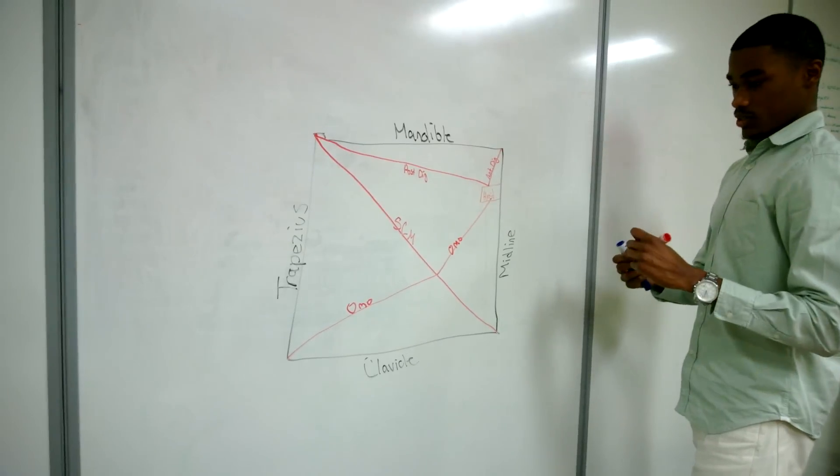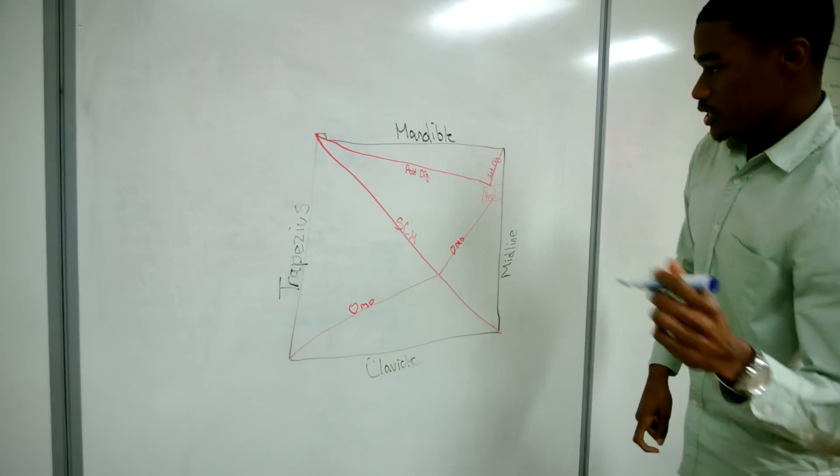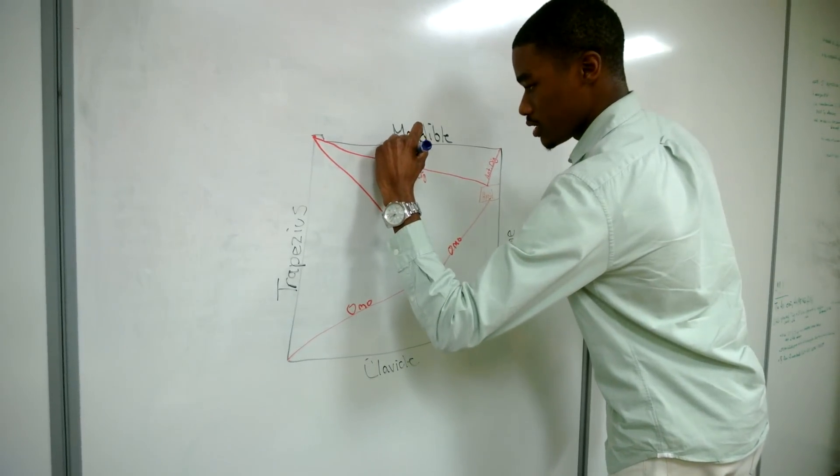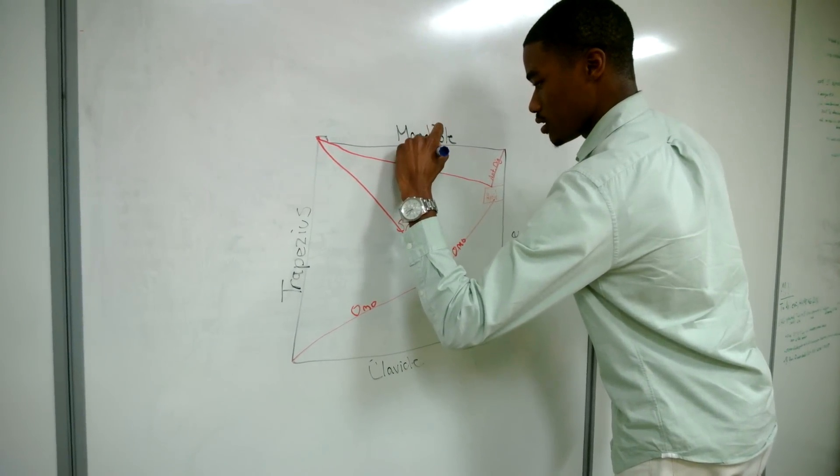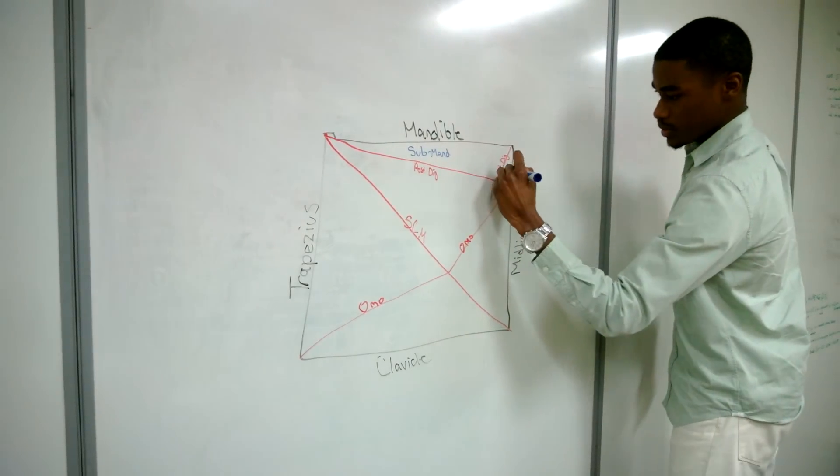All right, so we only do three muscles so far. Now let's label these triangles. Submandibular. Submental.